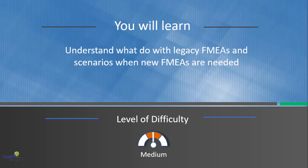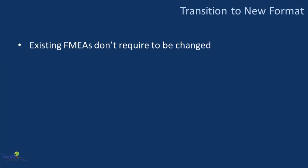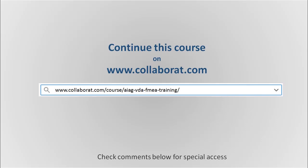So I want to add a quick note here, thereby reducing the anxiety for you. Here are the guidelines as per AIAG for transition to the new format. Existing FMEAs don't require to be changed. If you have an existing DFMEA or PFMEA for an existing process or for a product which is already in force, you could continue to maintain them in the old format.